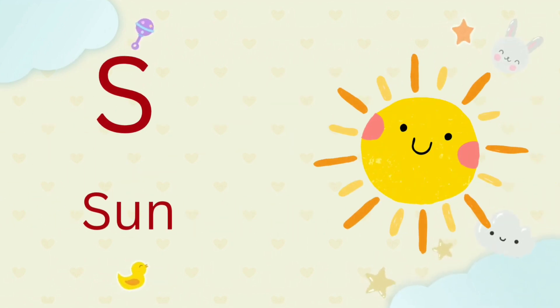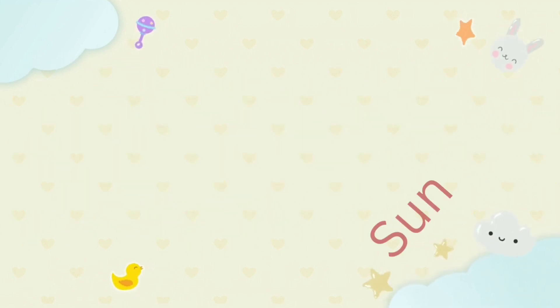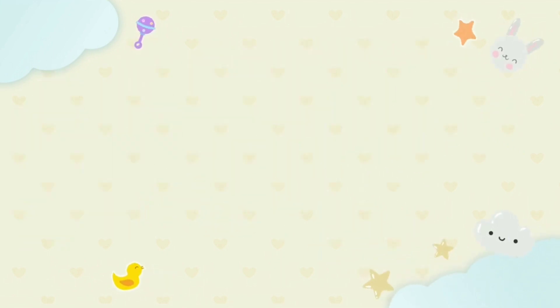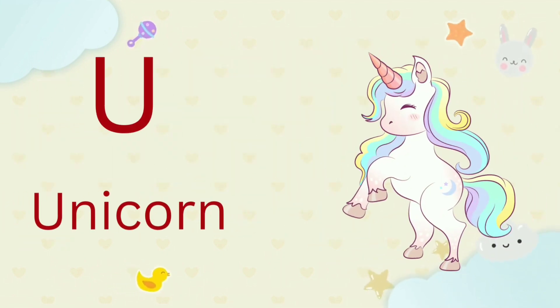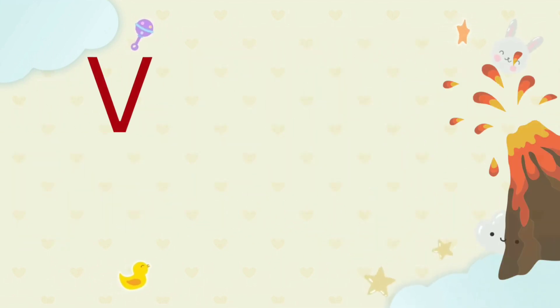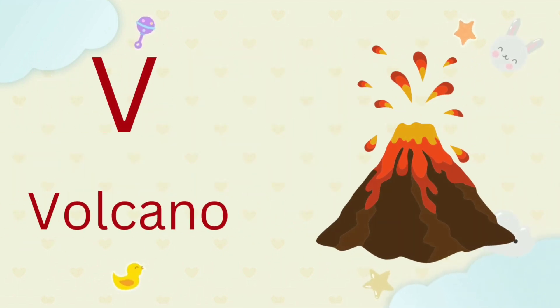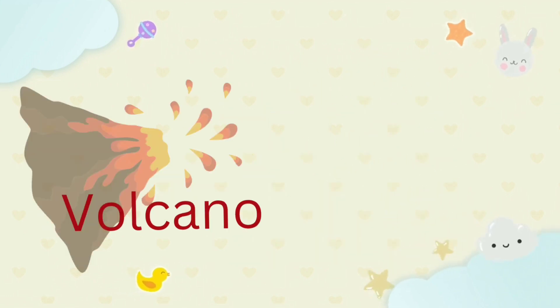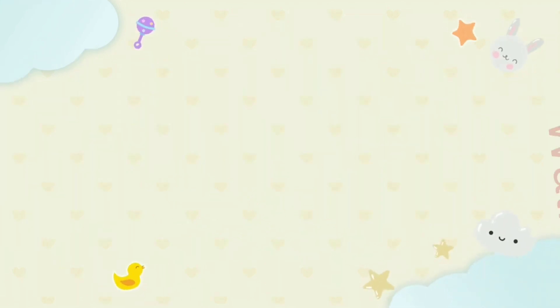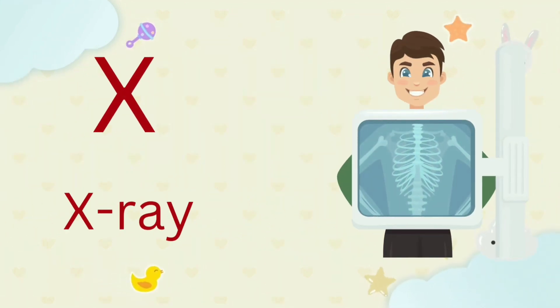S for sun, T for tree, U for unicorn, V for volcano, W for walnut.